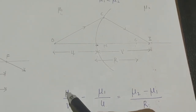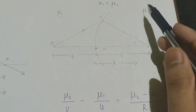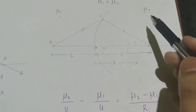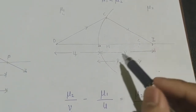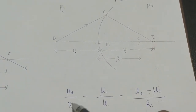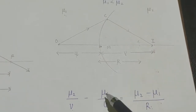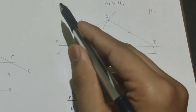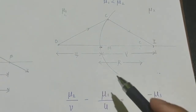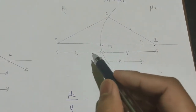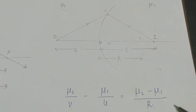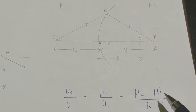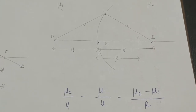Where mu 2 is the refractive index of the medium in which the image is formed, divided by image distance V. Mu 1 is the refractive index where the object is placed, divided by object distance U. This equals mu 2 minus mu 1 divided by R.